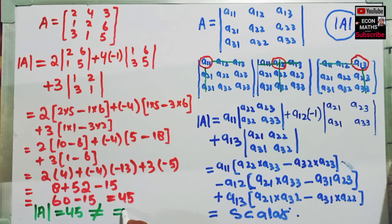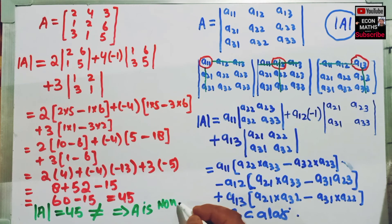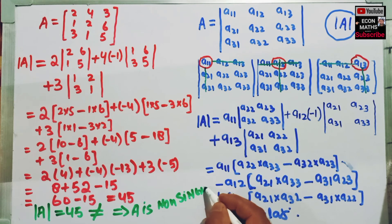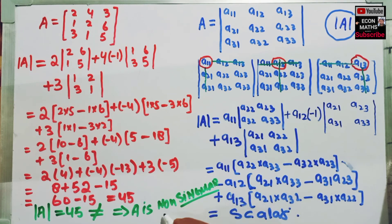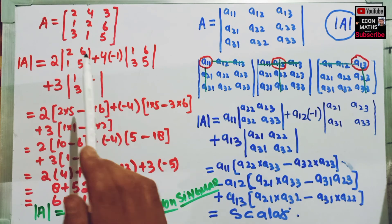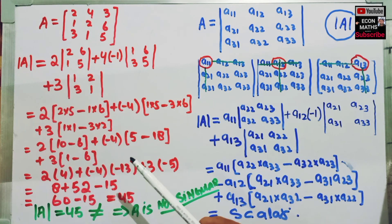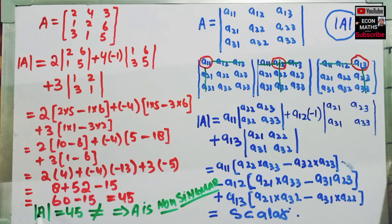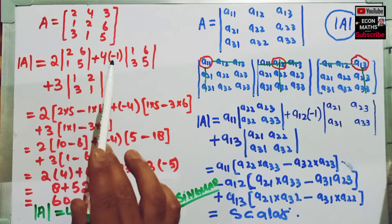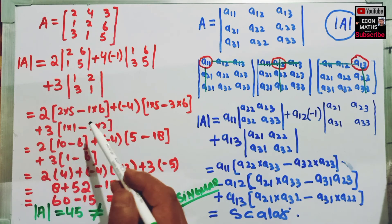This means the determinant is not equal to 0, which implies A is non-singular. By non-singular, this determinant has a unique solution. If the value of |A| were 0, then this determinant would have no solution.